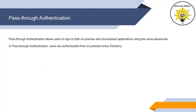Pass-through authentication allows users to sign in to on-premise and cloud-based applications using the same password. When a user tries to login to a cloud-based application, the authentication is performed from on-premise instead of Azure Active Directory. With password hash synchronization, we sync passwords from on-premise to Azure AD and authentication is performed by Azure AD. But with pass-through authentication, passwords are not synchronized to Azure AD and authentication is performed by the on-premise domain controller.